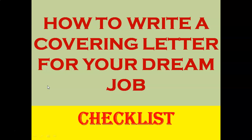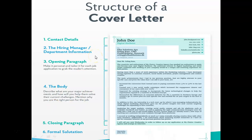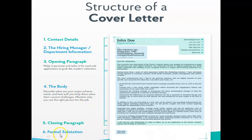Here I am also giving a checklist, with the help of which you can write your covering letter for a particular job. First, I will show the structure of a cover letter. It includes contact details, hiring manager and department information, an opening paragraph tailored to the job, the body, a closing paragraph, and finally a formal salutation. These six parts are the main parts of the structure of a cover letter.